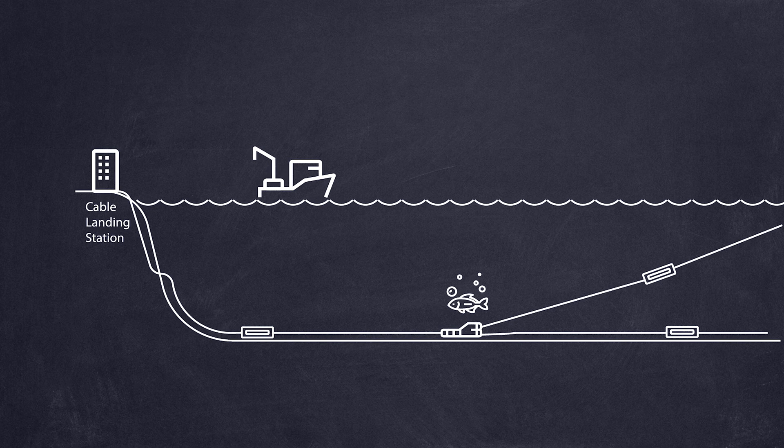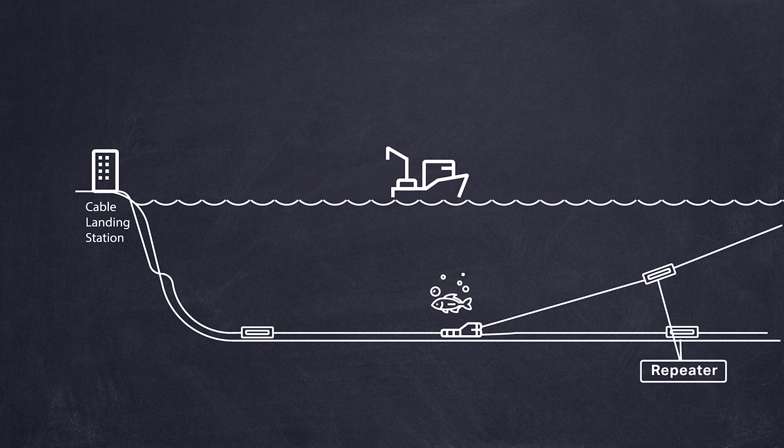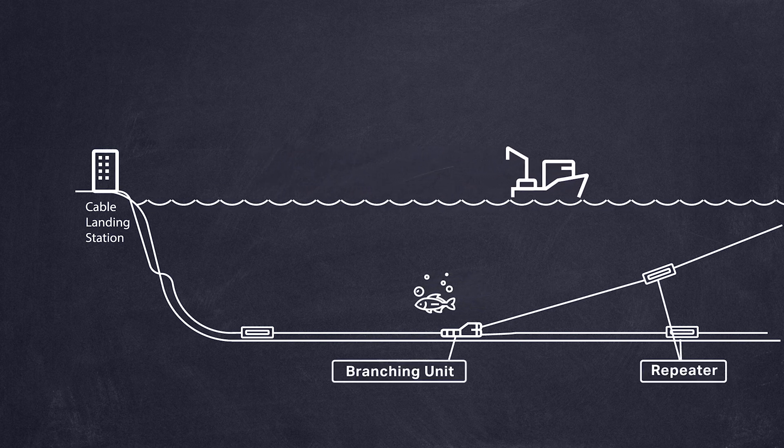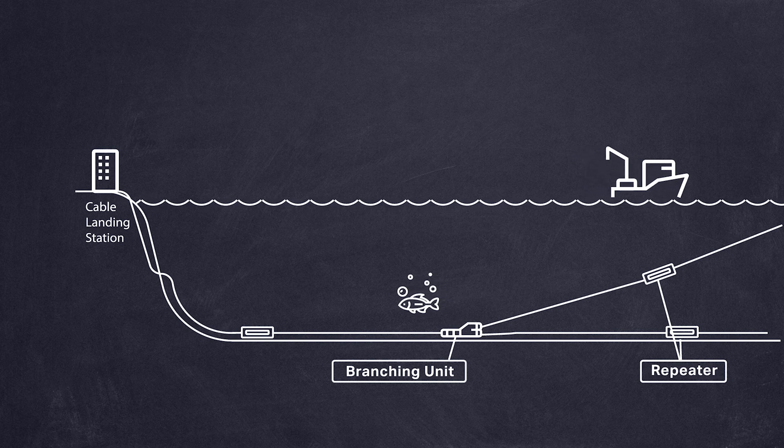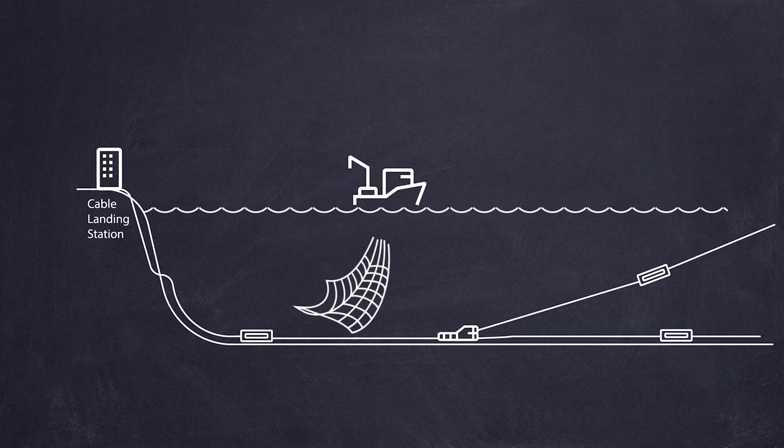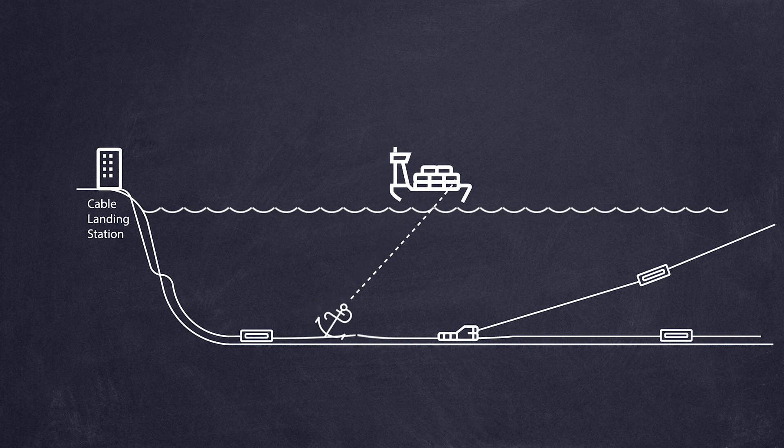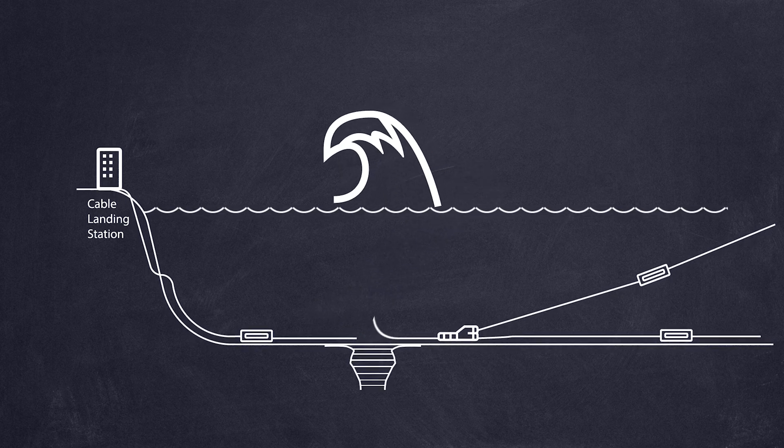These unseen networks are deployed in the harshest environment on Earth, at the bottom of the ocean, and are vulnerable to faults even when heavily armored and buried. The majority of cable faults are caused by fishing trawlers, ship anchors, earthquakes, tsunamis, and typhoons.